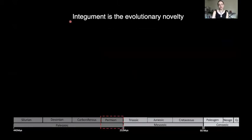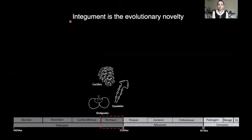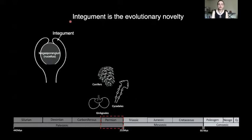Later on, during the Permian, three main lineages of gymnosperms evolved, and these all have extant representatives like ginkgo, cycads, and conifers. This was the first time that an actual integument covering the megasporangium evolved. Within gymnosperms, the micropyle — the opening that allows pollen to enter — produces a pollination drop to catch that pollen, and this wouldn't be possible without the fusion of those integumentary lobes.